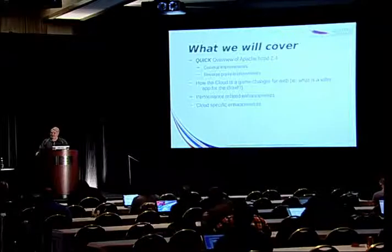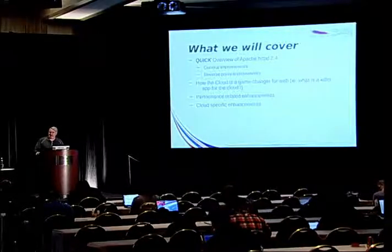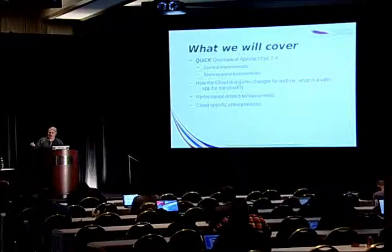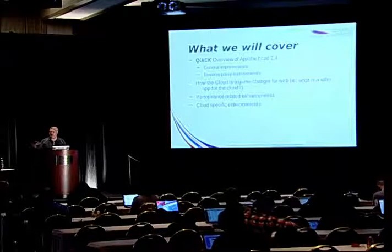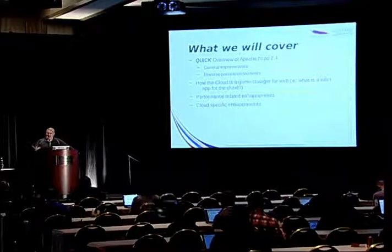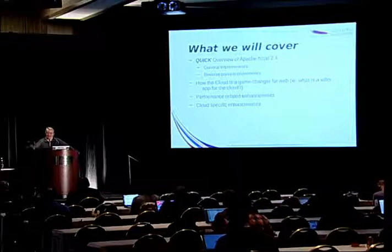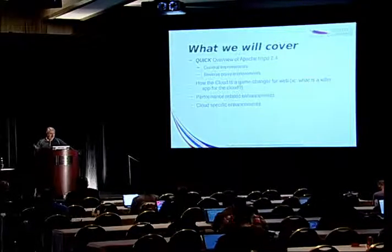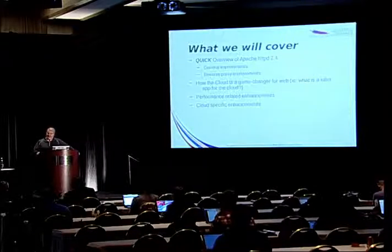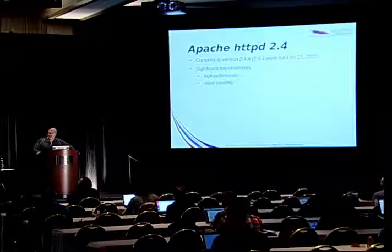What we'll talk about in the next 45 minutes or so is basically a quick overview of Apache 2.4. I realize a number of you most probably have been sat in on Rich's talk yesterday, so I'm not going to go into a lot of details — mostly aspects which are pertinent to this discussion. What are the features and enhancements that make Apache specifically cloud-suited? Also, some ideas about why cloud changes the game as far as what a web server should do, what kind of expectations and flexibility enhancements are important for the cloud related to the web. We'll also talk about performance enhancements between 2.2 and 2.4, and finally, some cloud-specific enhancements mostly related to the proxy server built inside of it.